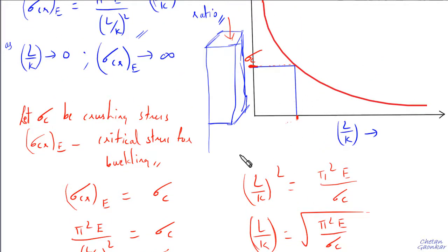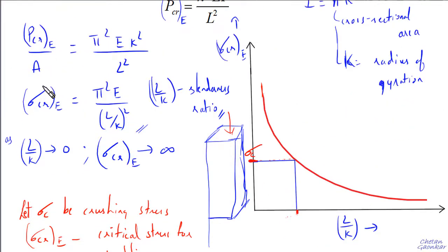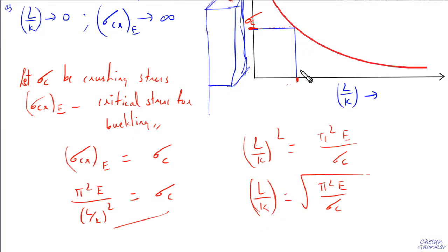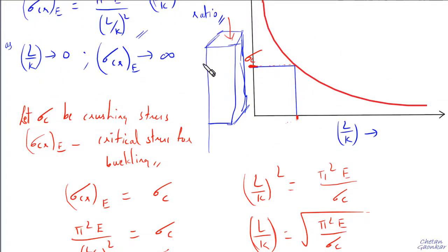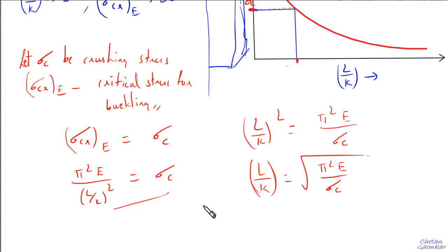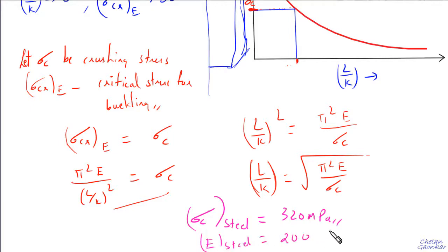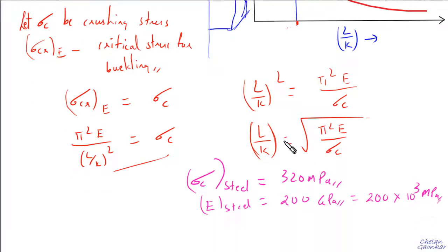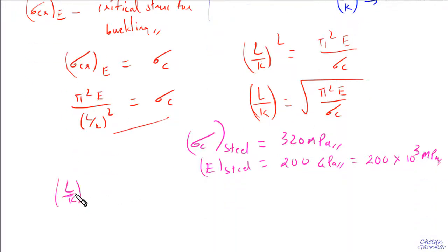Below this value of L/k, the column will fail under crushing load rather than buckling. For a material like steel, σ_c is approximately 320 MPa and E is approximately 200 GPa (200×10³ MPa). Substituting these values of steel along with π into this expression, the limiting slenderness ratio for steel works out to approximately L/k = 78.54.